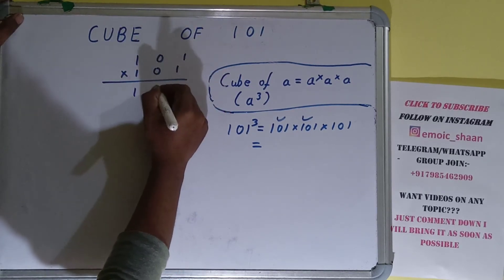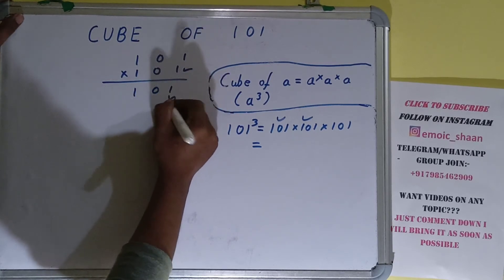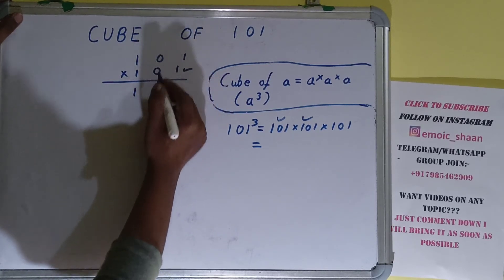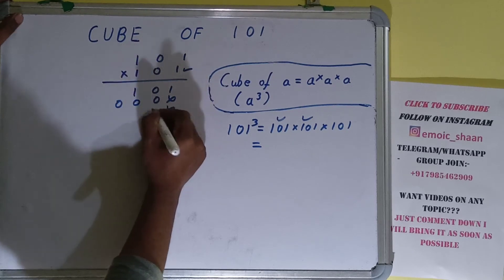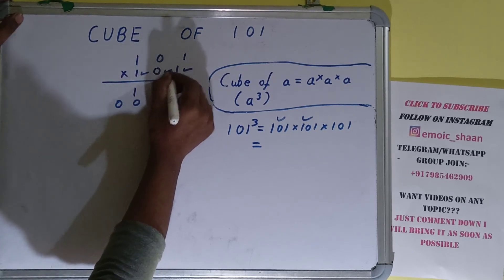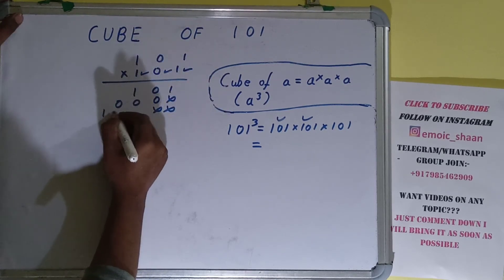For this zero, zero into anything is zero so we can just write three zeros. And for this one we can write again upper row, we can just copy.